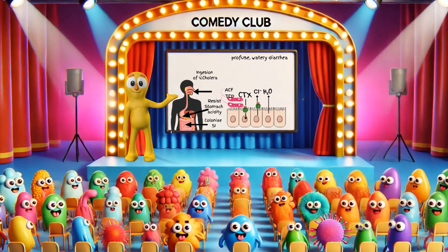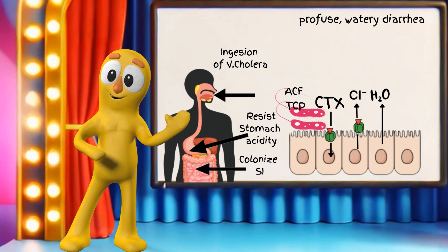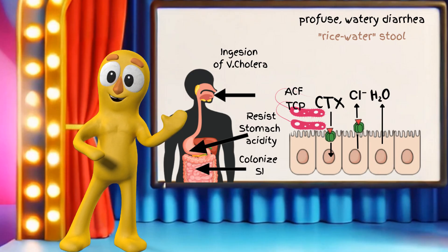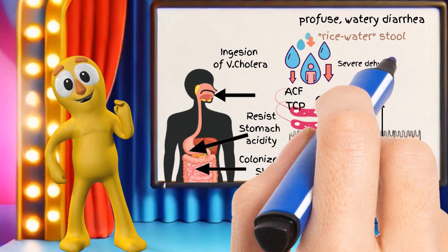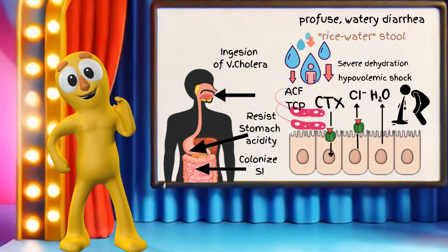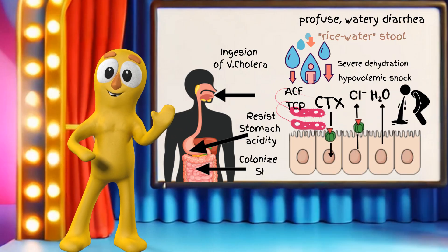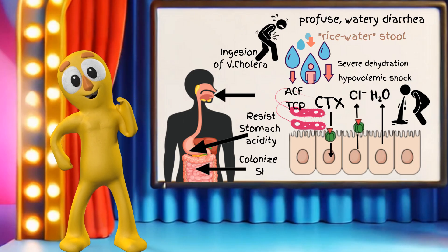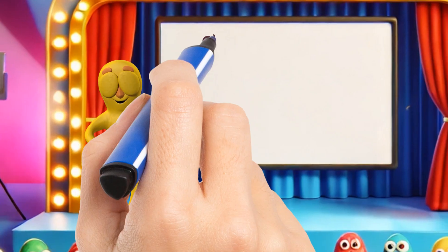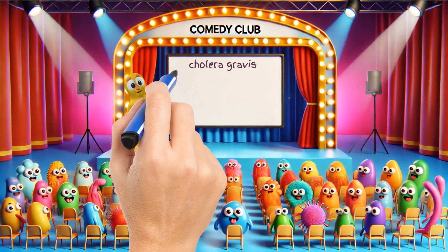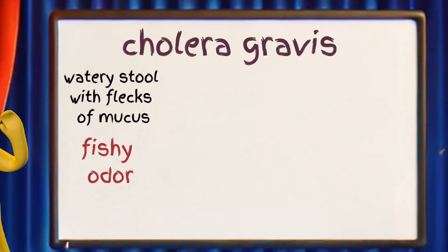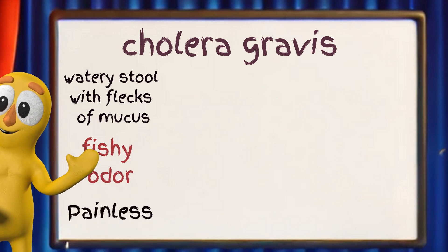This hallmark symptom — profuse, watery diarrhea — is often described as rice water stool. This rapid fluid loss can lead to severe dehydration and even hypovolemic shock if not treated quickly. Vomiting may start before or after the diarrhea begins, and some people might have abdominal cramping, though it's usually not as painful as dysentery. Severe cholera, also called cholera gravis, can cause a watery stool with flecks of mucus, often having a fishy odor. This diarrhea is typically painless without the straining seen in other infections.